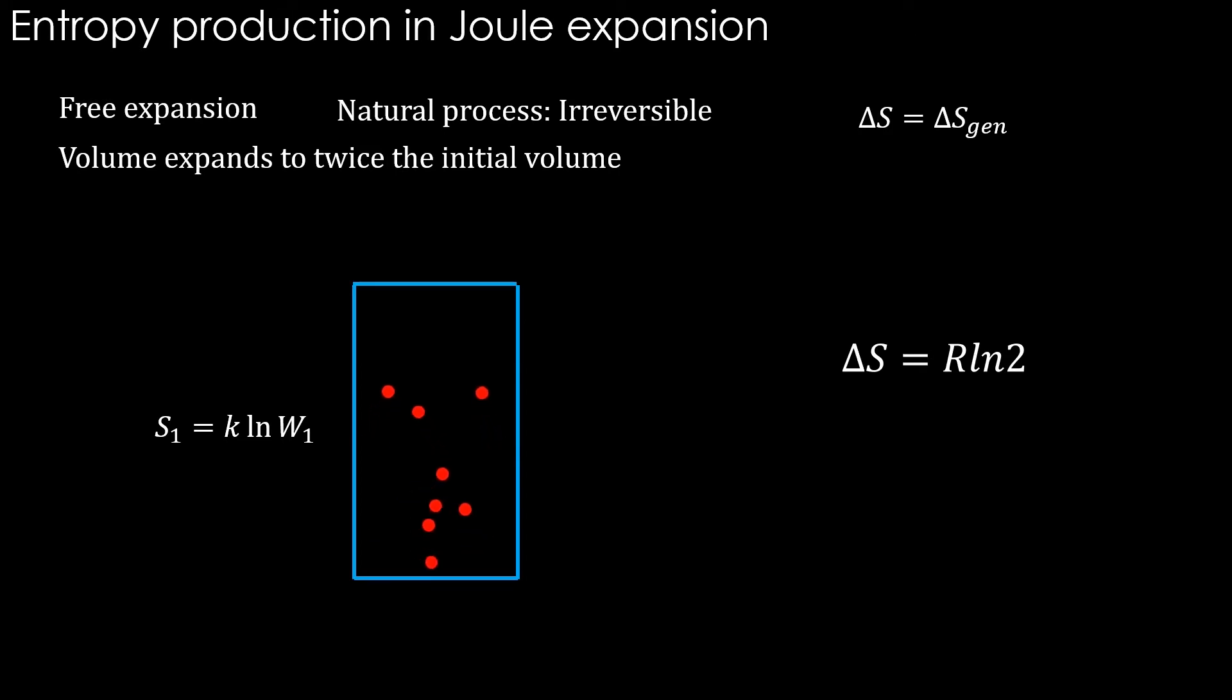For the initial state S1 equals K natural log of W1. After the expansion S2 equals K natural log of W2. Now to find W1 and W2, we need discrete entities of whatever that is going to change between these two states.